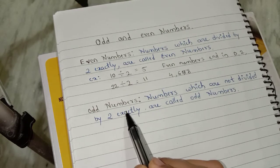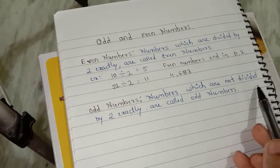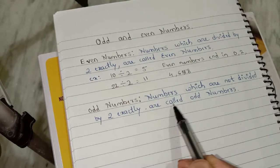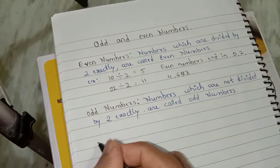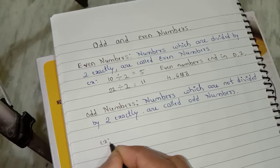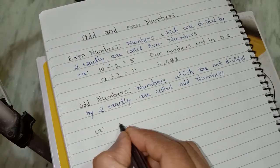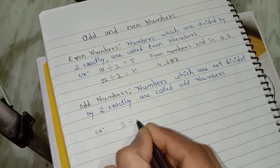What is odd numbers? Numbers which are not divided by 2 exactly are called odd numbers. For example, here I will take 3 and I am going to divide by 2.